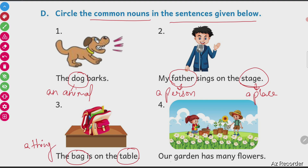Our garden has many flowers. Garden is a place where we plant flowers — a place. Garden is the common name for a place where we plant flowers.